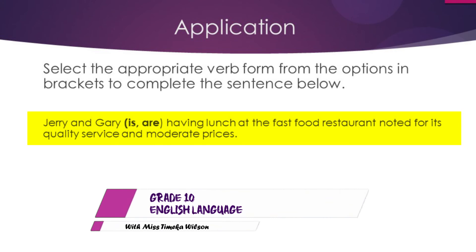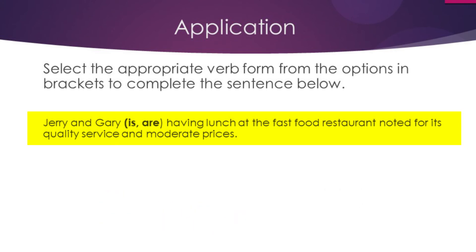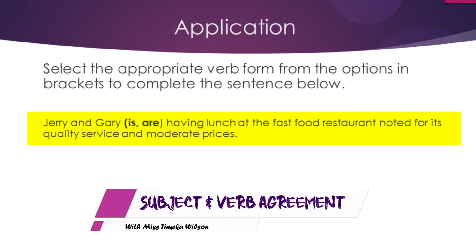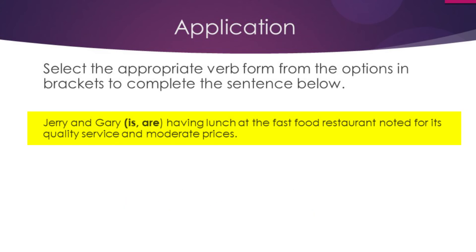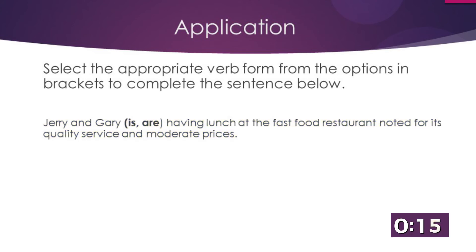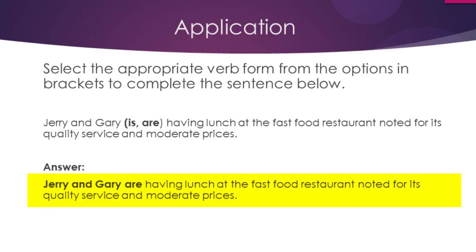Exercise five: Jerry and Gary [is / are] having lunch at the fast food restaurant noted for its quality service and moderate prices. We have two subjects joined by the conjunction AND — Jerry and Gary — which is plural. So we must use the plural form of the verb. The answer is: Jerry and Gary are having lunch at the fast food restaurant.